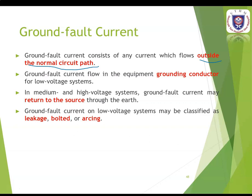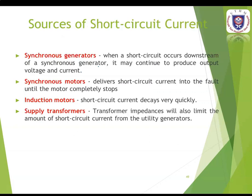Ground fault current on low voltage systems may be classified as leakage, voltage, or arcing. The sources of short circuit current are: synchronous generators, synchronous motors, induction motors, and supply transformers.